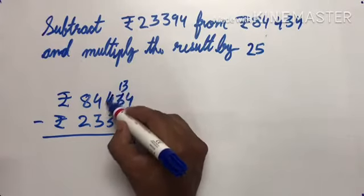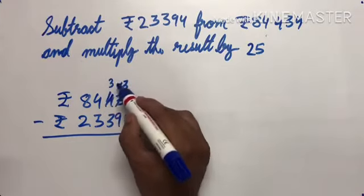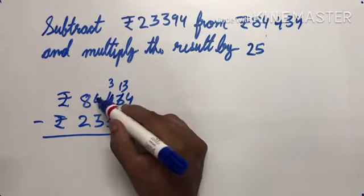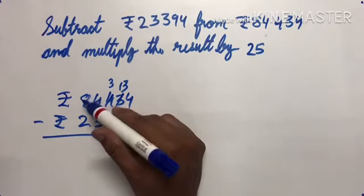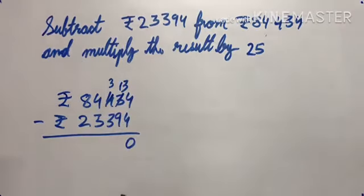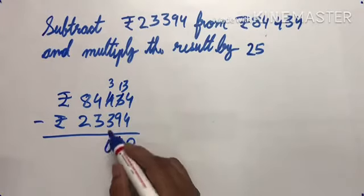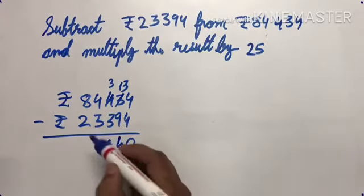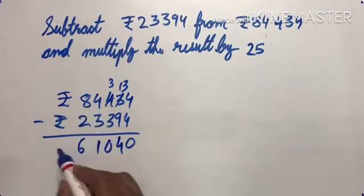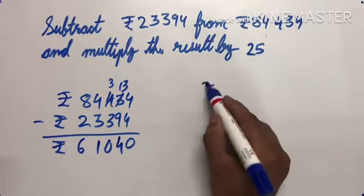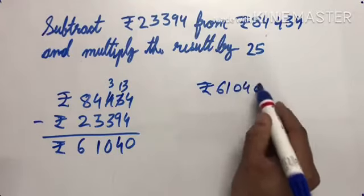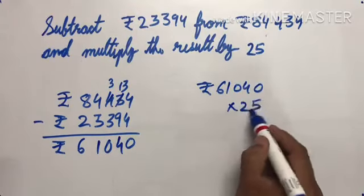84,434 minus 23,394. We cannot subtract 4 from 3, so take from next: 14 minus 4 is 10, which gives 0. 3 minus 9, cannot do, so 13 minus 9 is 4. 3 minus 3 is 0, 4 minus 3 is 1, 8 minus 2 is 6. So our answer is 61,040, and we have to multiply this by 25.